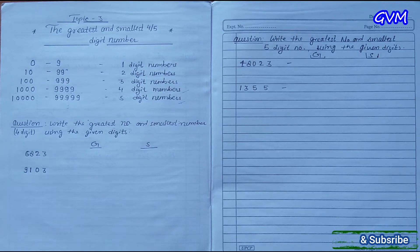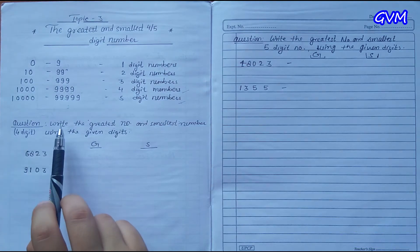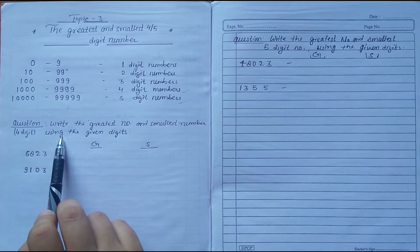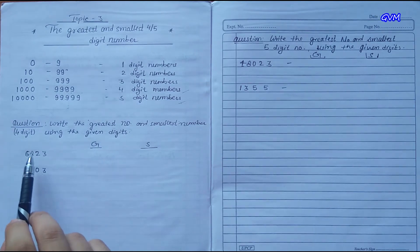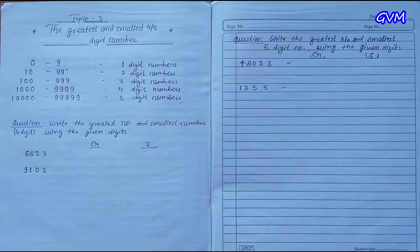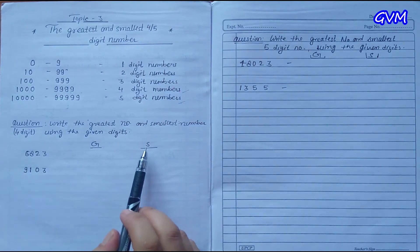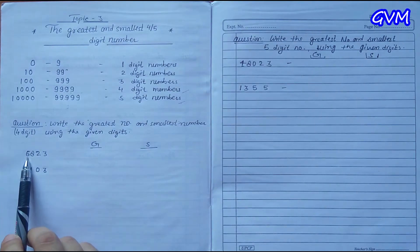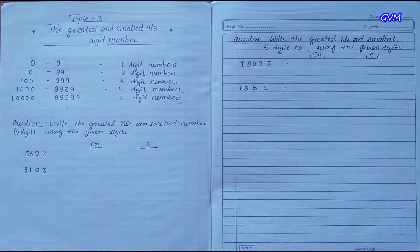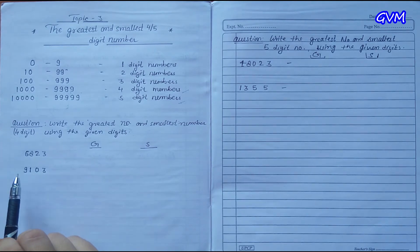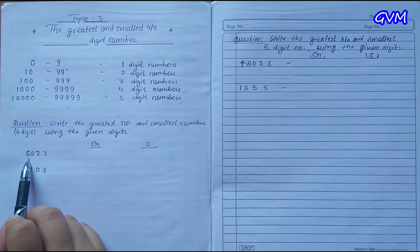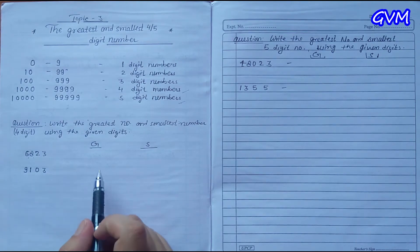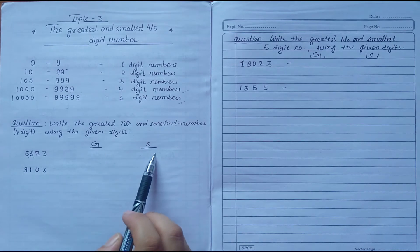Let's discuss the first question: write the greatest number and smallest number in four digits using the given digits. One important thing to remember is that no digit will be repeated — we will use each number only once.